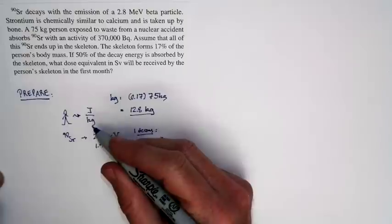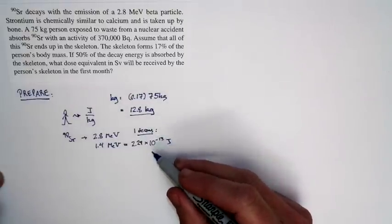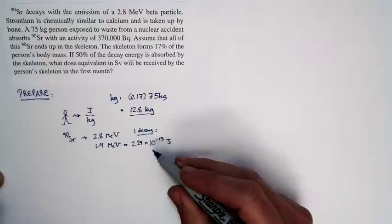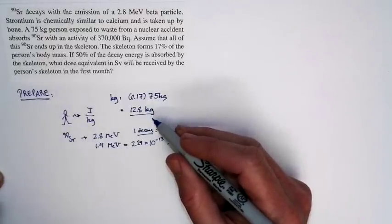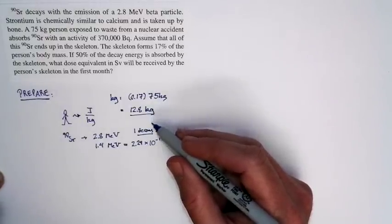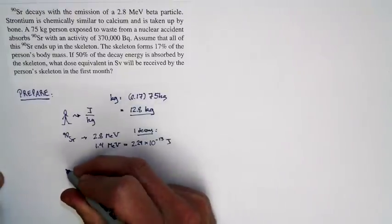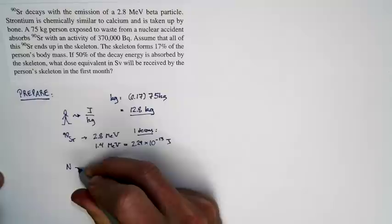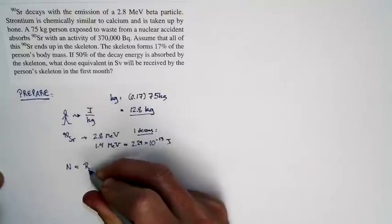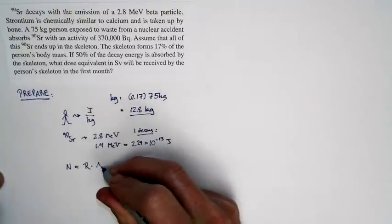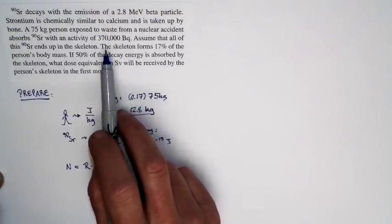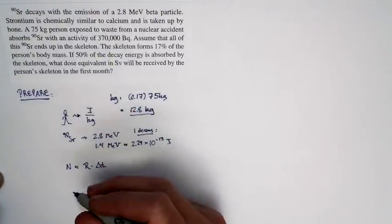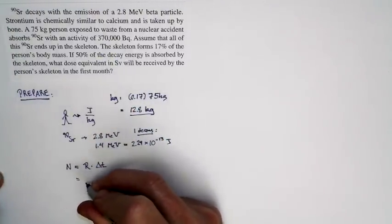So each decay deposits this much energy in the skeleton, which has this much mass. Now, we need to work out joules per kilogram. We know how much energy each decay deposits, we know the kilograms of the skeleton, but another piece of information that we need is: how many decays are there? Well, the number of atoms that decay is just equal to the decay rate, which is the decays per second times the time interval. And the decay rate is given as 370,000 Becquerels, that's 370,000 decays per second.